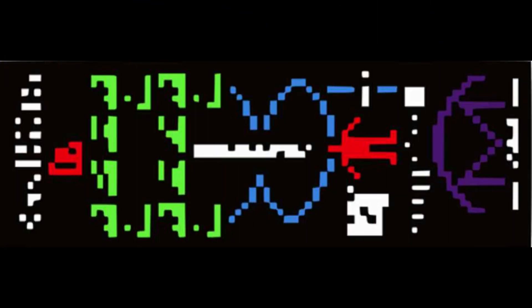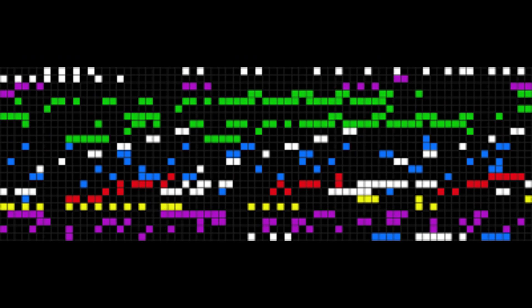The Arecibo message, consisting of 1679 binary bits, conveyed human DNA, the solar system, and the Arecibo telescope itself. Every detail was carefully chosen to facilitate comprehension by any advanced civilization capable of intercepting it.